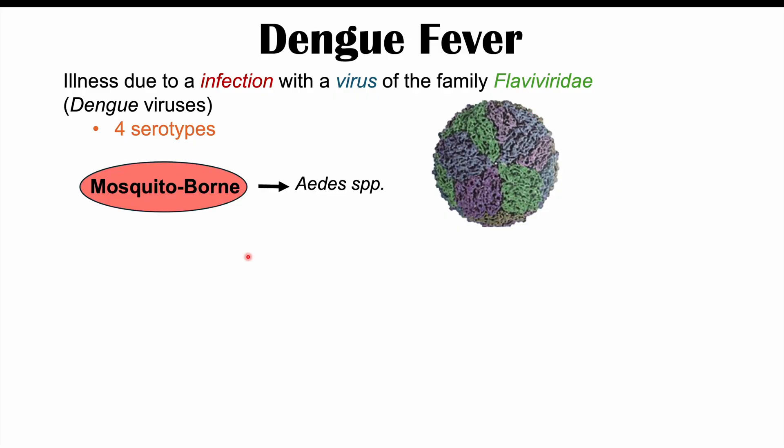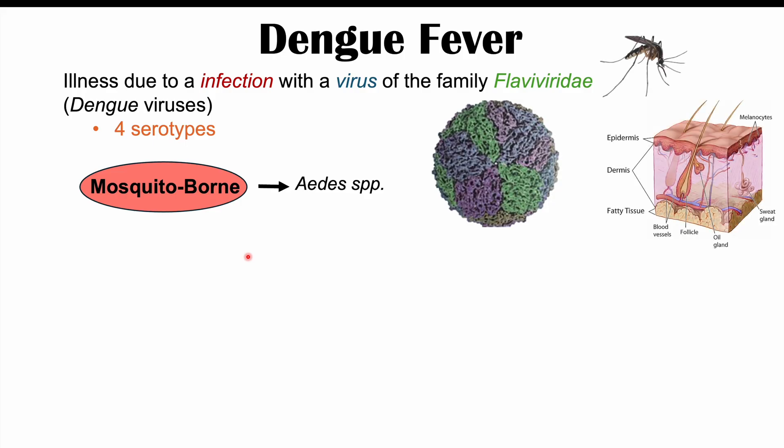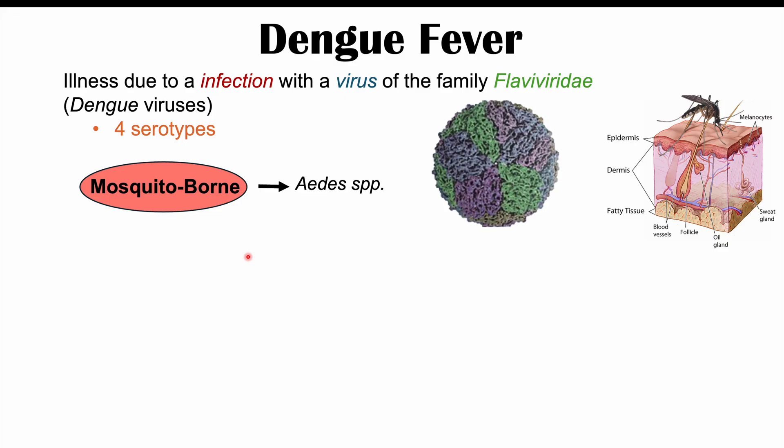We're going to get infected by this particular virus by being bitten by a mosquito. So it's a mosquito-borne illness, and more specifically, it's going to be carried by Aedes species of mosquitoes — Aedes aegypti and Aedes albopictus. These are two species that can carry this virus and, when biting humans, can transmit it and cause dengue fever.